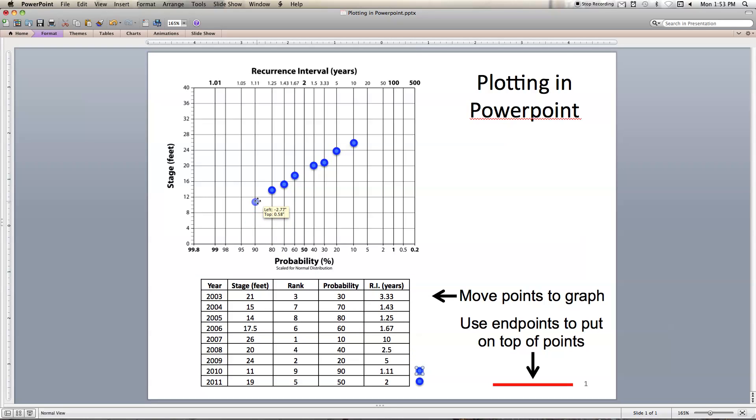90 and 11. And finally, probability of 50% and a stage of 19. And I need to adjust it a little again. There we go.